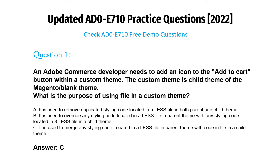A. It is used to remove duplicated styling code located in a LESS file in both parent and child theme. B. It is used to override any styling code located in a LESS file in the parent theme with any styling code located in the LESS file in a child theme. C. It is used to merge any styling code located in a LESS file in the parent theme with code in a file in a child theme. Answer: C.